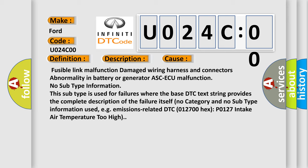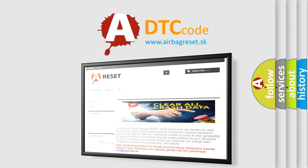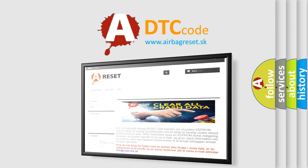No subtype information. This subtype is used for failures where the base DTC text string provides the complete description of the failure itself. No category and no subtype information used, e.g. emissions-related DTC P0127 intake air temperature too high. The Airbag Reset website aims to provide information in 52 languages. Thank you for your attention and stay tuned for the next video.